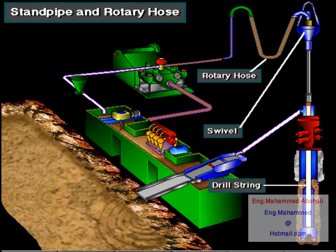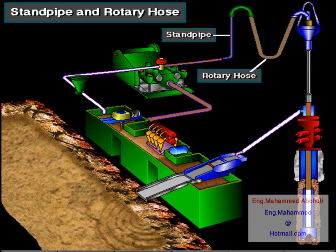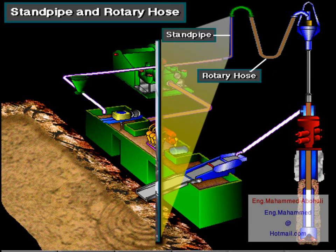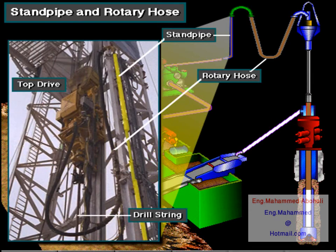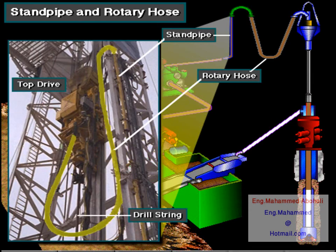From the rotary hose, the pump moves mud through the swivel and then down the kelly and drill string. On rigs with a top drive, the mud moves through a passage in the top drive and then into the drill string.